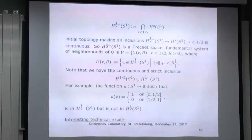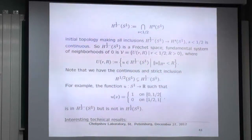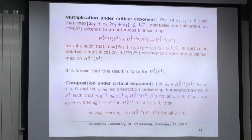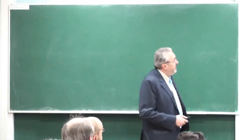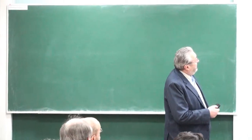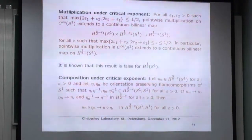Take all the H^s's and intersect them for s < 3/2, putting the initial topology making all inclusions continuous. I can give you precise neighborhoods of the identity. However, H^{1/2} is strictly included in this intersection — here is a counter example. So you are forced into technical results about whether you can multiply and compose Sobolev functions below the critical index. The answer is yes, but it requires careful work.